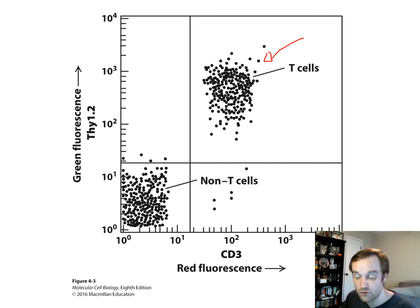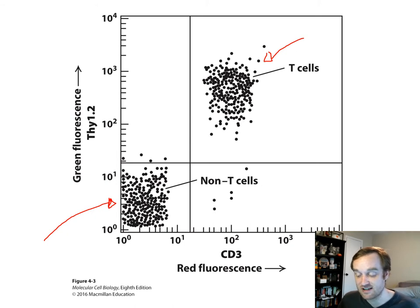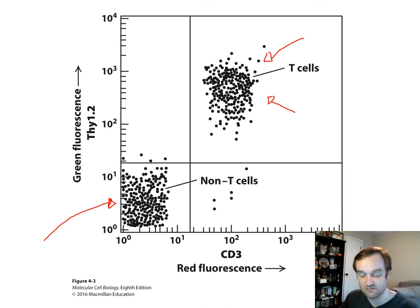Cells with very low red and very low green fluorescence express only background levels and are other types of white blood cells — non-T cells. By having antibodies that fluoresce and attach to specific cell surface proteins, the FACS machine can sort out the desired T cells and remove everything else from the cell suspension. It's an interesting way to isolate certain cells from complex mixtures.